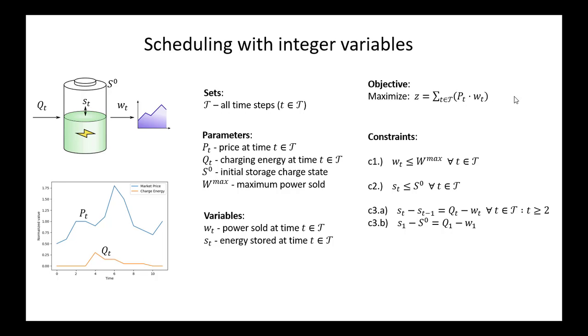The objective is expressed here as a summation of price and power over our time horizon. We had four constraints that we were working with: one related to constraining the maximum power, another related to constraining the maximum energy in storage, and then third, with kind of two sub-variants related to enforcing energy balance on the battery storage from one time step to the next.